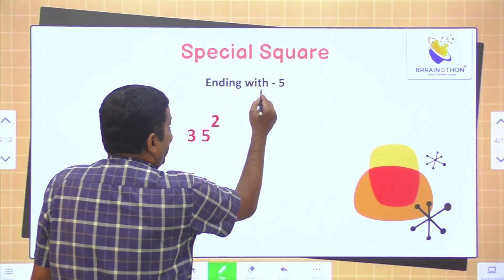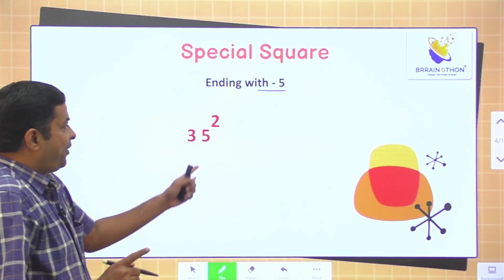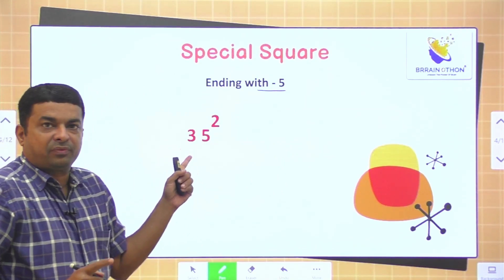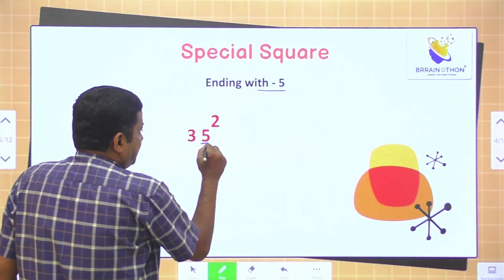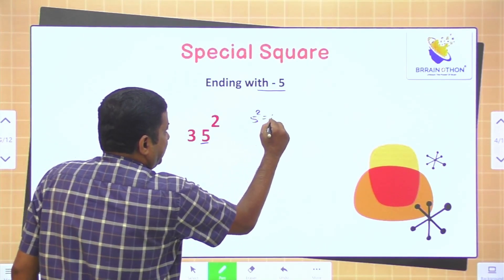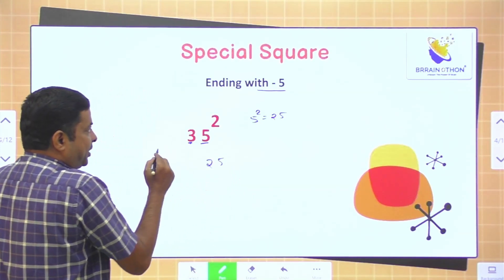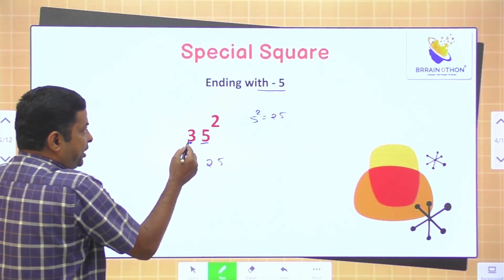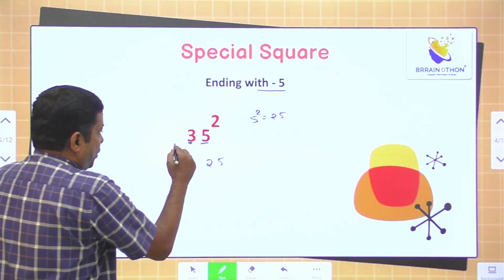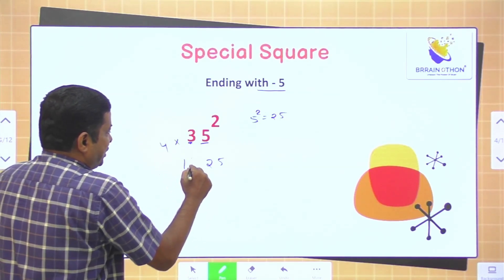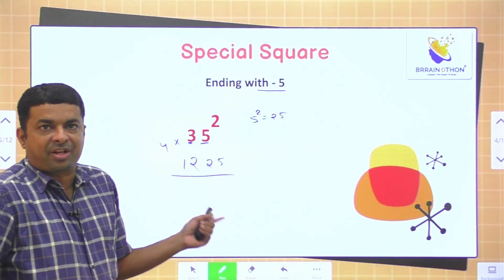Special Square ending with 5. Suppose any number that ends with 5 and if you want to find the square of that number, you can do it easily. What you need to do? Find the unit place square — 5 square is 25, so write 25. Now, in the next step, check the tens digit and multiply it with its next number. The next number of 3 is 4, and 3 multiplied by 4 gives you 12. So the final answer is 1225. You can solve this type of question in a fraction of a second.